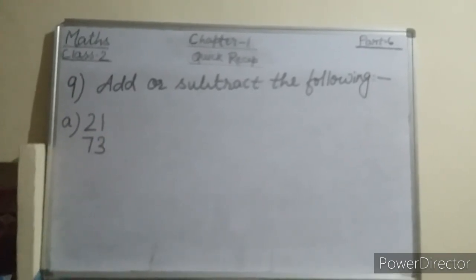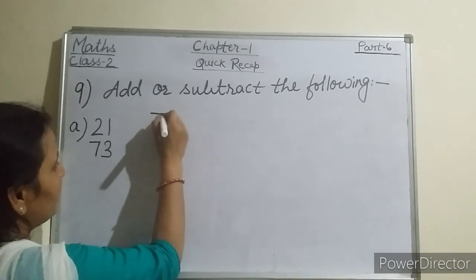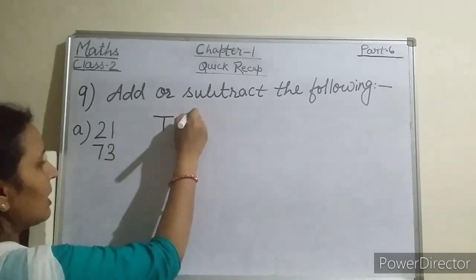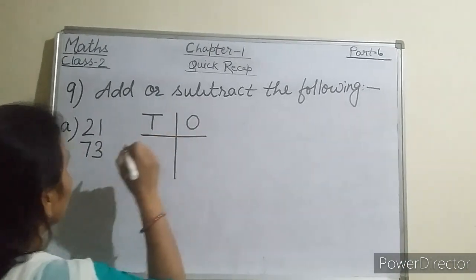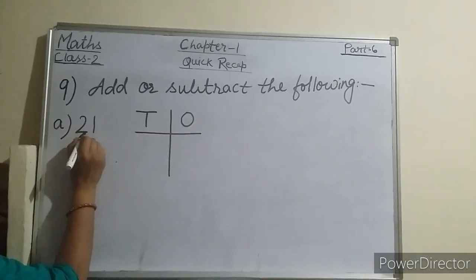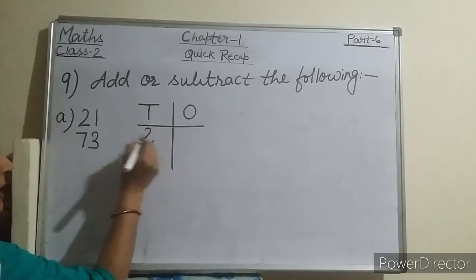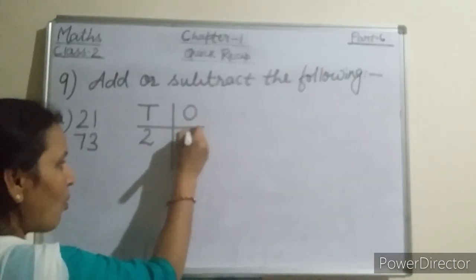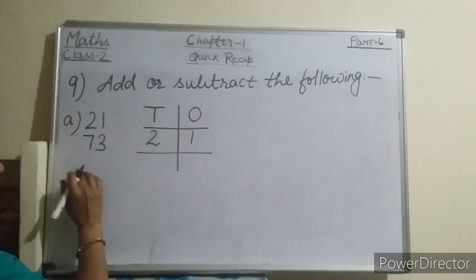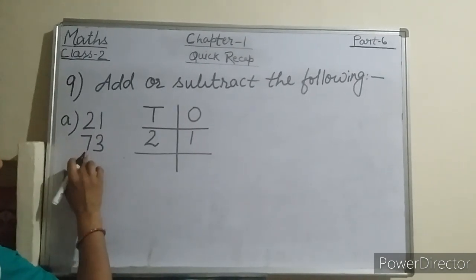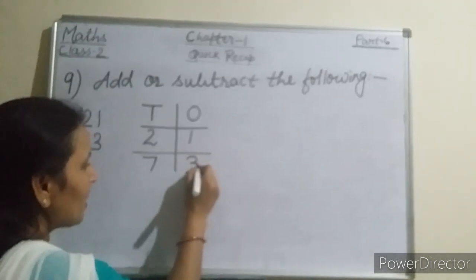First of all, what we have to do? We have to arrange these numbers. We will write here T for tens and O for ones. The first digit 2 will come at the tens place and the last digit 1 will come at the ones place. Like this, for 73: the first digit 7 will come at the tens place and 3 will come at the ones place.